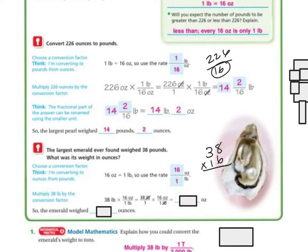38 times 16: 6 times 8 is 48, 6 times 3 is 18 plus 4 is 22. Put my 0 placeholder. Now I'm done with this one and I'm on to the 1. So 8 times 1 is 8, 3 times 1 is 3.